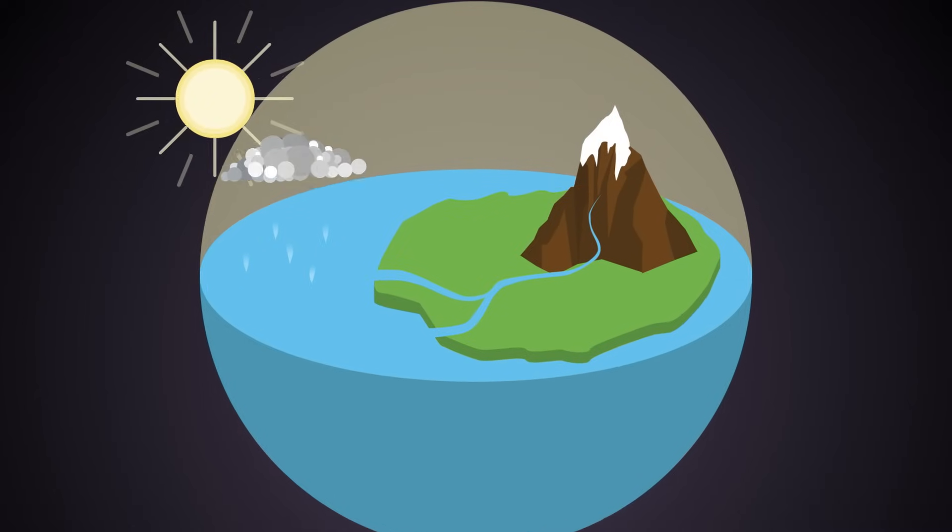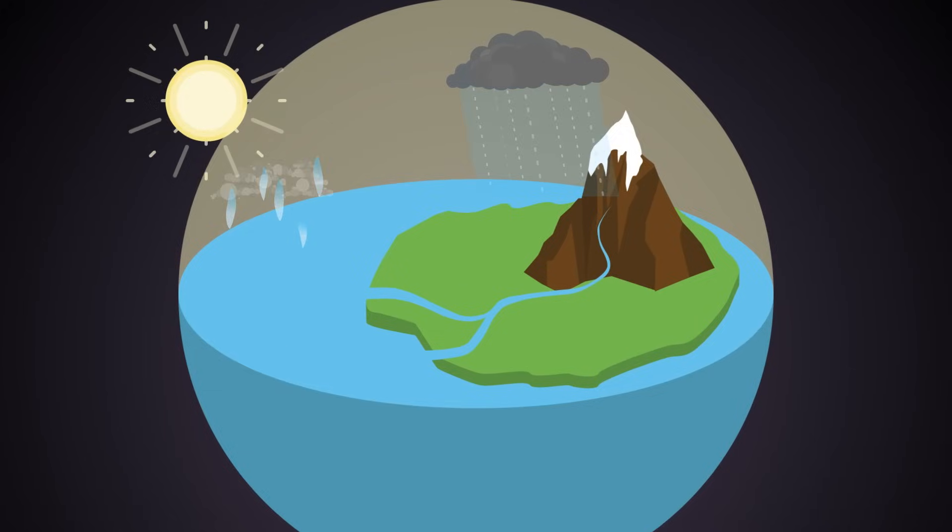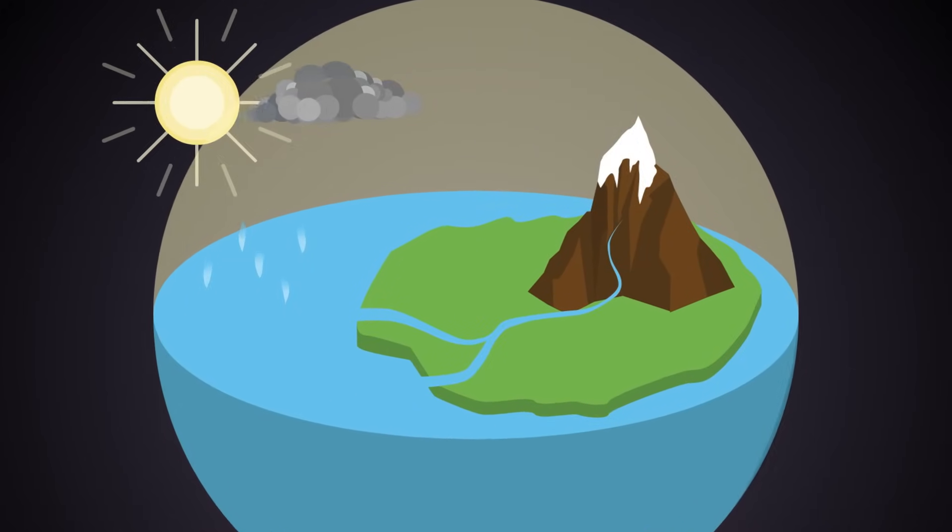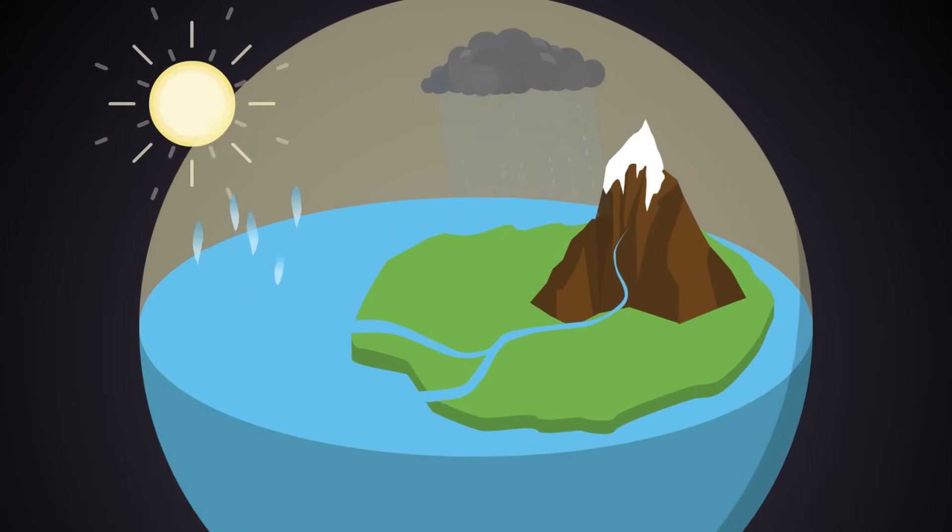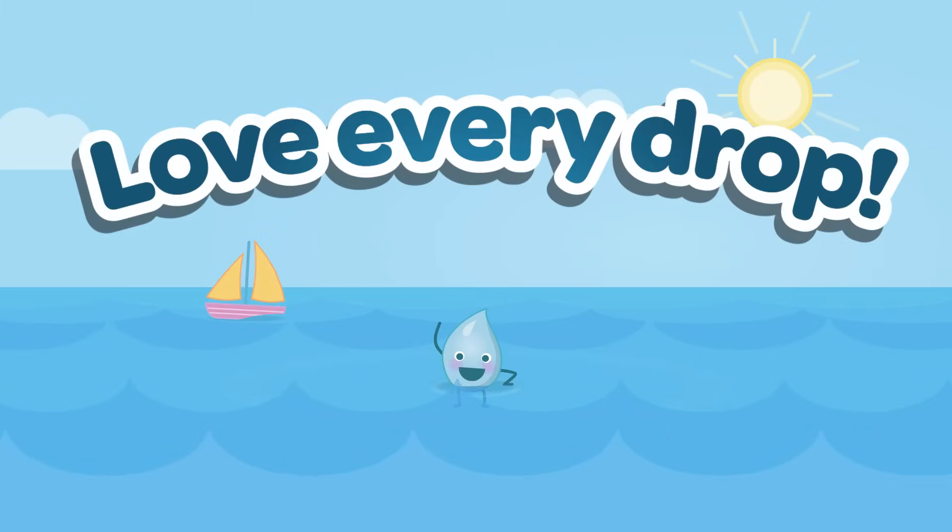In nature, the way water keeps changing states is called the water cycle. Rain is part of the water cycle, and from it we collect water to drink and use in our homes. Please remember, love every drop.